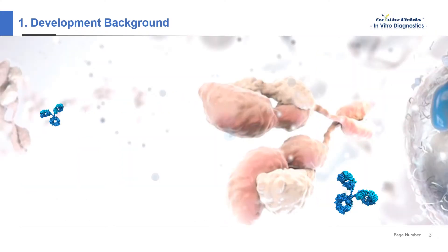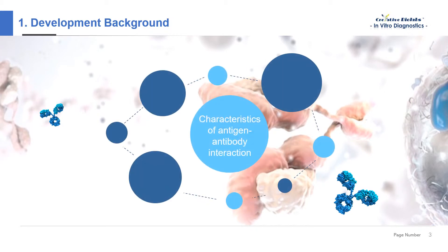By the principle of specific binding of antigens and antibodies, it is possible to develop highly specific in vitro diagnostic antibodies against biomarkers, thereby diagnosing diseases. We should pay more attention to the antigen-antibody interactions. First, specificity: due to the complementary spatial structure of the antigen and antibody, the combination of the two has high specificity.